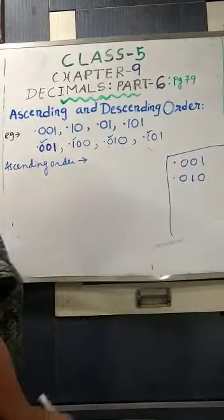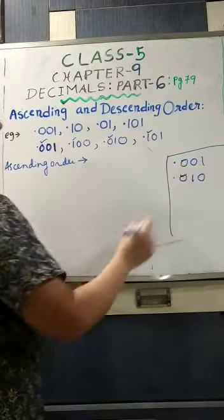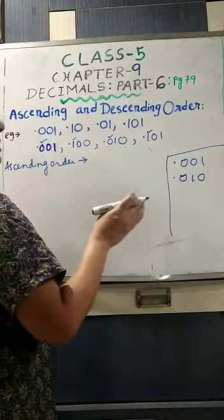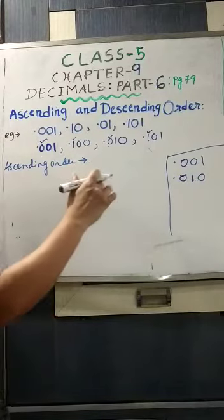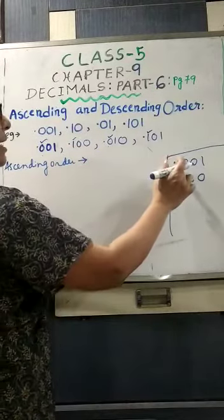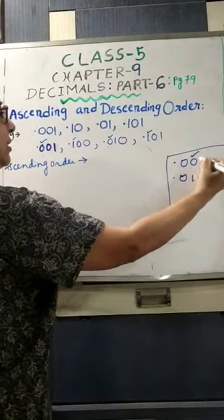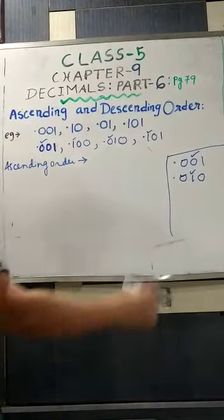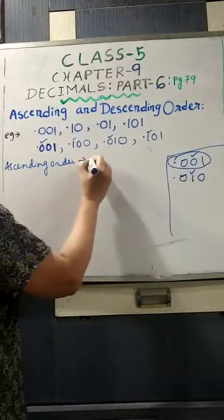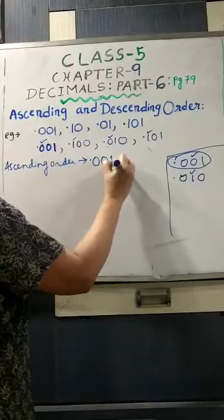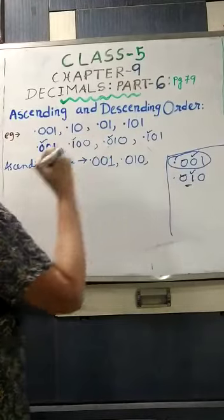Both numbers 0.001 and 0.010 are having 0 in their tenths place, so they are the same there. As I told you, if the digits in a position are the same, we go to the next position. So as there are two zeros in the tenths place, we go to the hundredths place — it is 0 and 1. As 0 is smaller, we write 0.001 as the smallest, and after that 0.010.